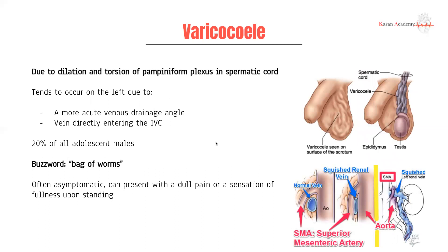Next, we have a varicocele, which is due to dilation and tortuosity of the pampiniform plexus in the spermatic cord — the venous plexus draining blood back. It tends to occur more so on the left side for two reasons: a more acute venous drainage angle, and direct drainage into the IVC. You can also have nutcracker syndrome, where the superior mesenteric artery compresses the left renal vein, leading to backflow and pressure buildup, subsequently causing a varicocele.